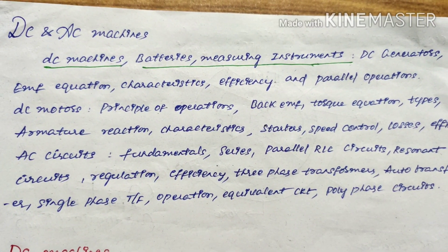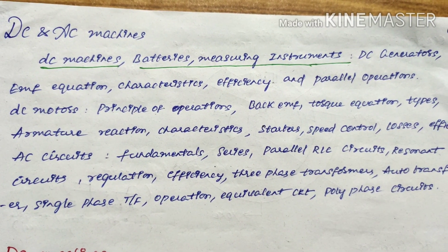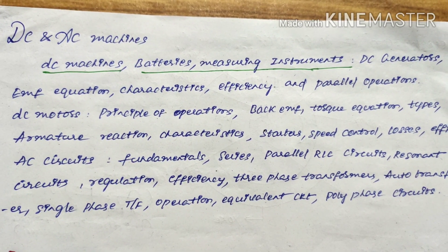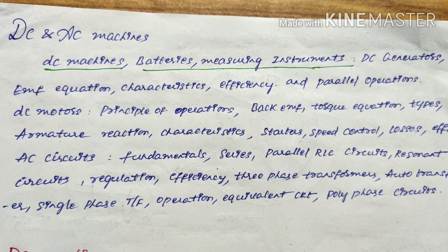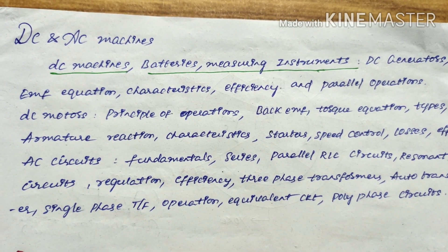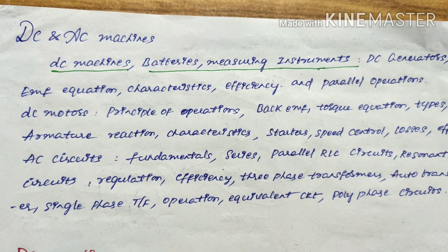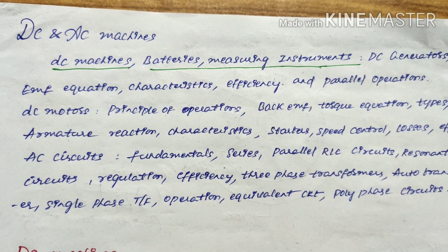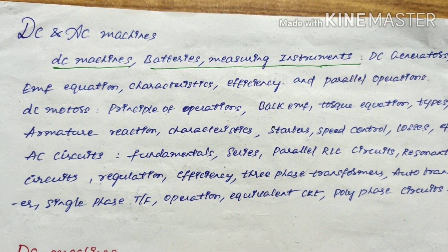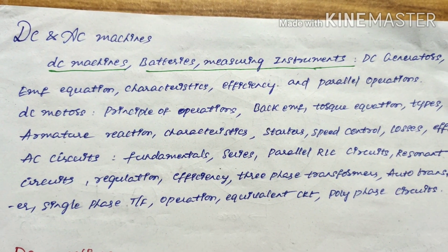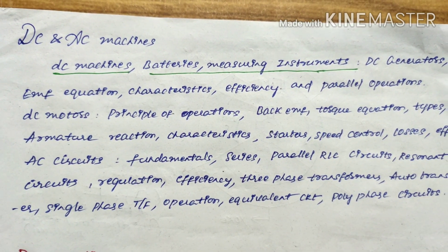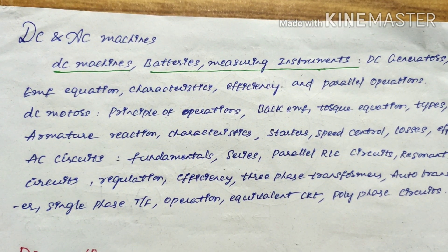Hi friends, welcome to my channel. Today's topic is DC and AC machines. DC machines are classified into two types: DC generator and DC motor.